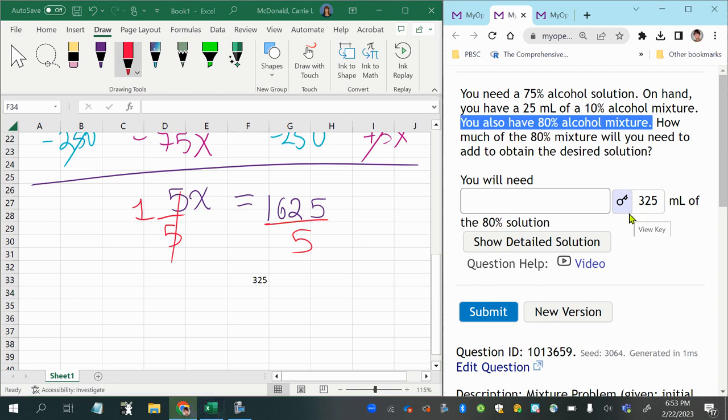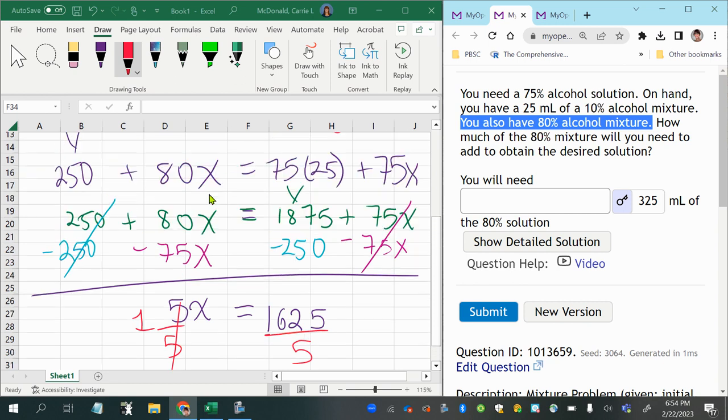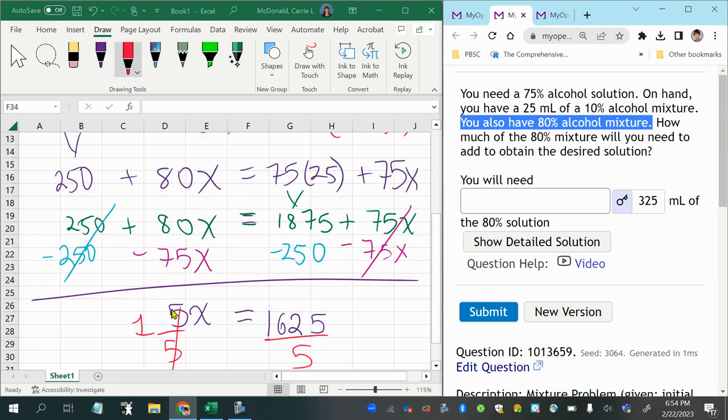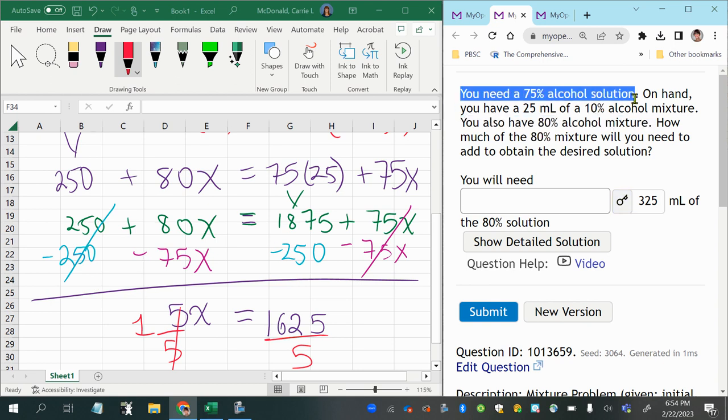325, which is the answer of how much of the 80% solution we were going to need to mix in with the 10% solution to achieve a 75% alcohol solution.